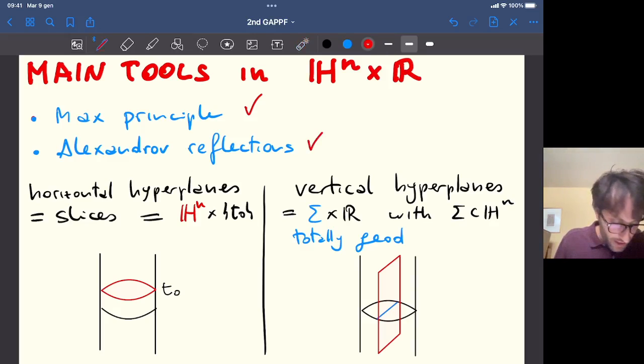In our ambient manifold, we are lucky because there are a lot of hyperplanes. In particular, they are of two types. The horizontal ones, that sometimes are called slices, are just a copy of the hyperbolic space. So, here in the picture, I consider the Poincaré disk for H^n, then I consider the cylinder over the Poincaré disk.